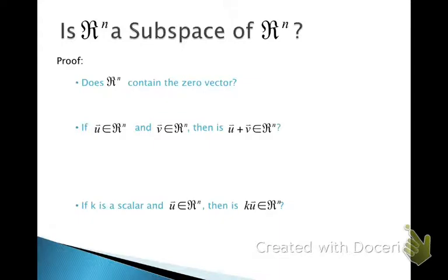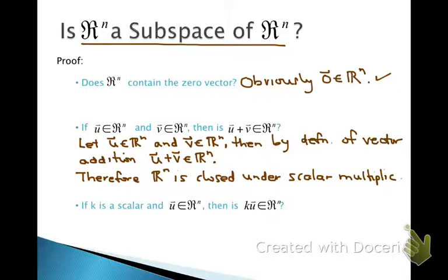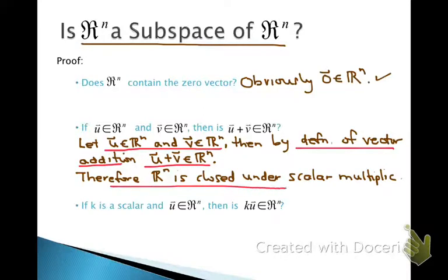Here is another subspace proof: we show that Rn is a subspace of itself. First, Rn is a subset of Rn — certainly Rn belongs to Rn. Does Rn contain the zero vector? Obviously, zero belongs to Rn. Next, if U and V are in Rn, then by the definition of vector addition their sum also belongs to Rn. Therefore Rn is closed under vector addition.